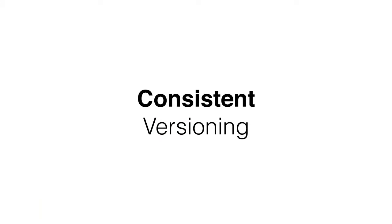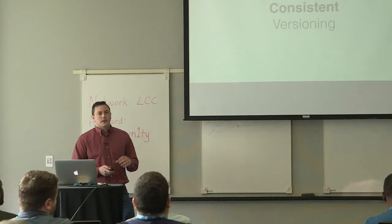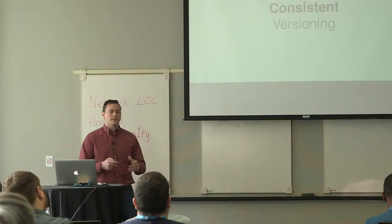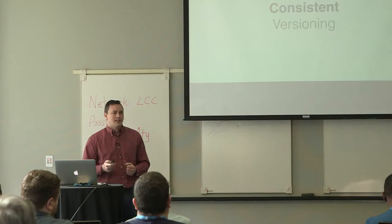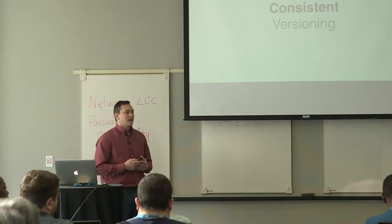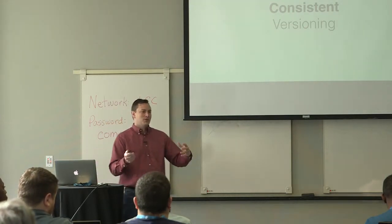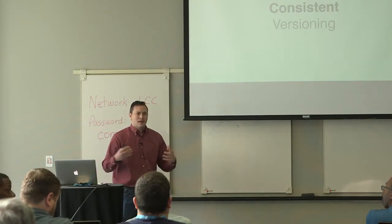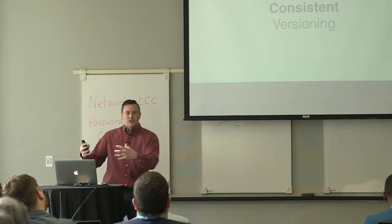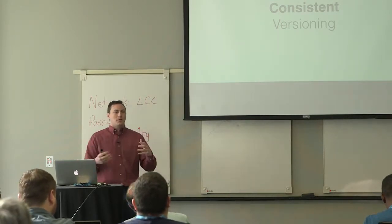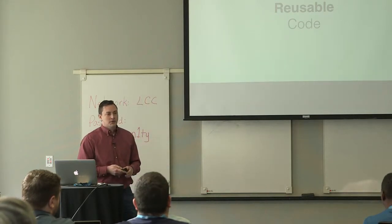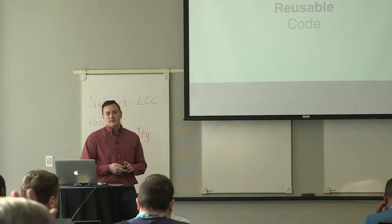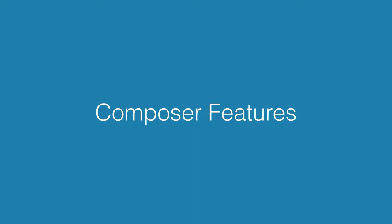Why use it? The first thing it does is help you eliminate duplication. It provides a canonical source where your code can live, so instead of having multiple repositories containing similar code, you can give it a home and point all your projects to that particular codebase. It allows consistent versioning. When I first started development, we were creating a platform for law firms on top of WordPress and ended up with multiple versions per client because it was really hard to track what version of the code each client had. It also encourages you to develop in a modular way and makes it easy to reuse your code.